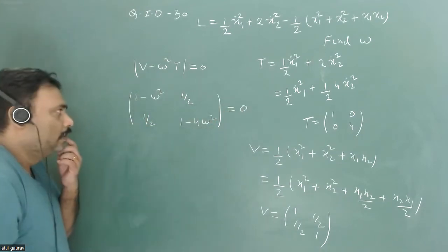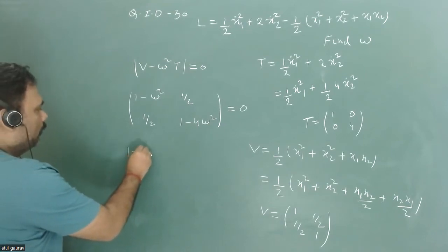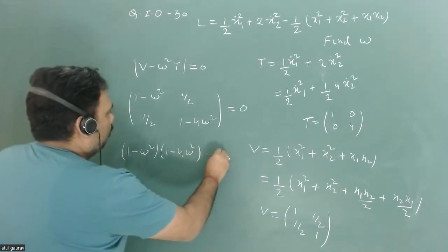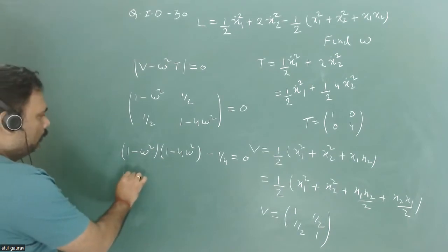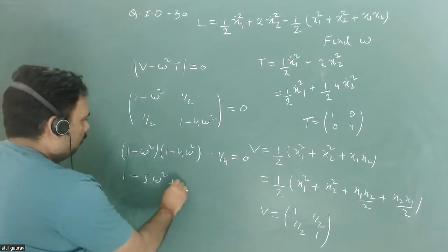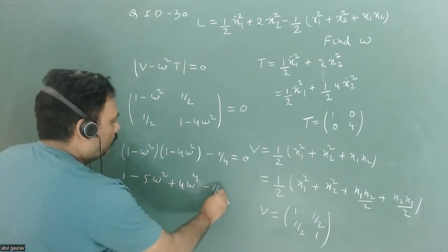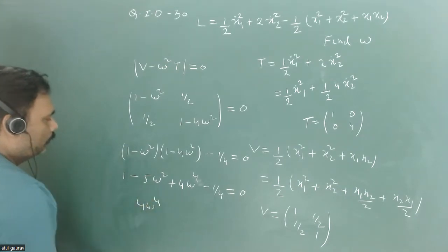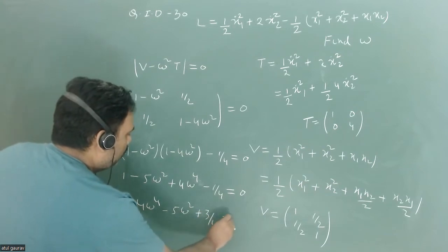Expanding the determinant: (1 minus omega squared)(1 minus 4*omega squared) minus 1/4 equals zero. Opening this out gives: 1 minus 5*omega squared plus 4*omega to the fourth minus 1/4 equals zero. This simplifies to: 4*omega to the fourth minus 5*omega squared plus 3/4 equals zero.